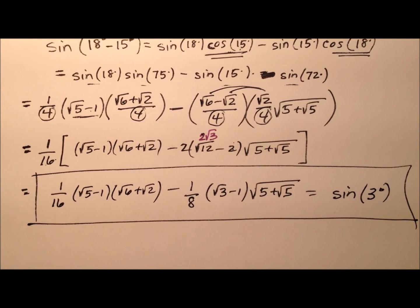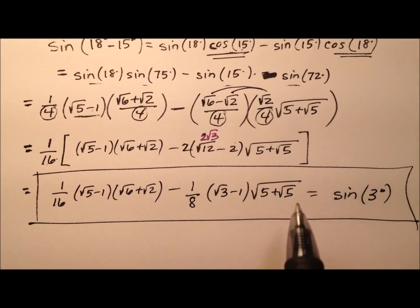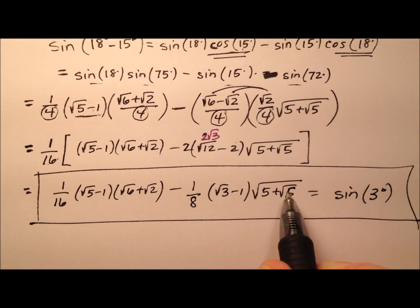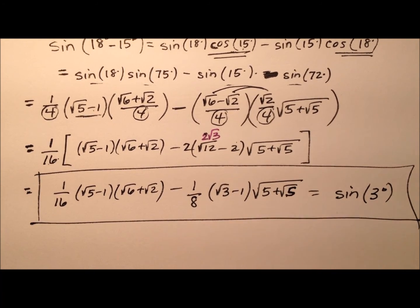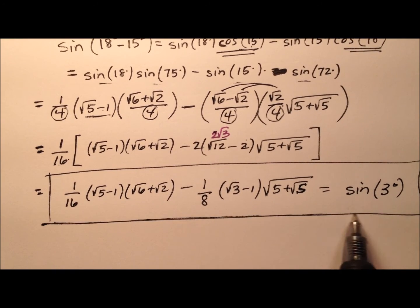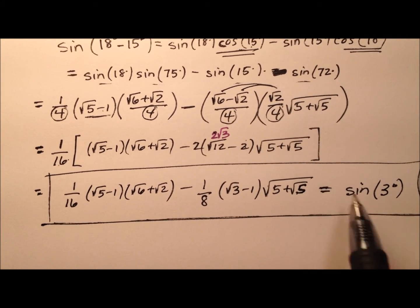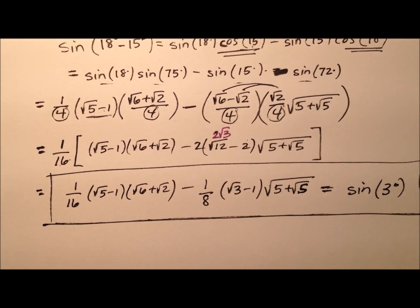This isn't as brilliantly simple as the sine of 30, which is 1/2, but this is about as simple as we can get it, and this is the exact value for the sine of 3 degrees.